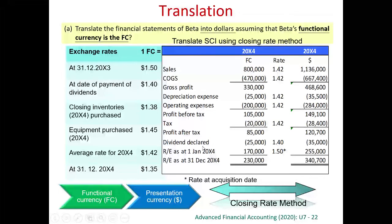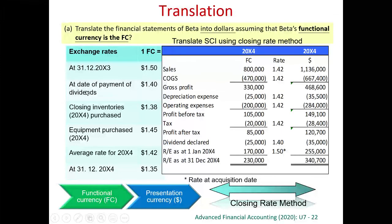Dividend is not income or expense — dividend is a movement in equity. Therefore, we should use the actual exchange rate. The question states that when the dividend was made, the rate was 1.4. So we use the actual exchange rate of 1.4 for the dividend.